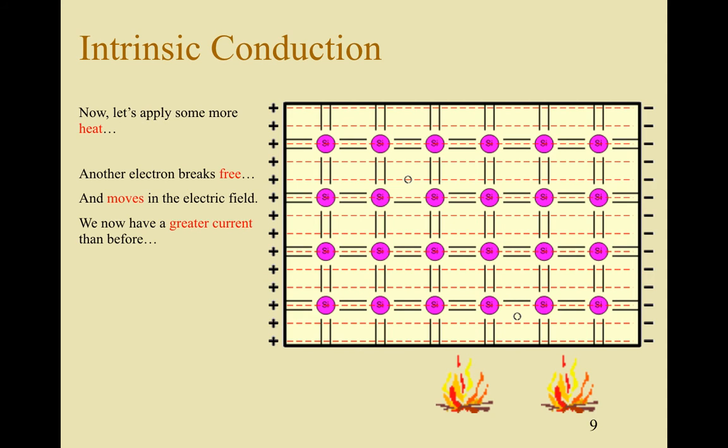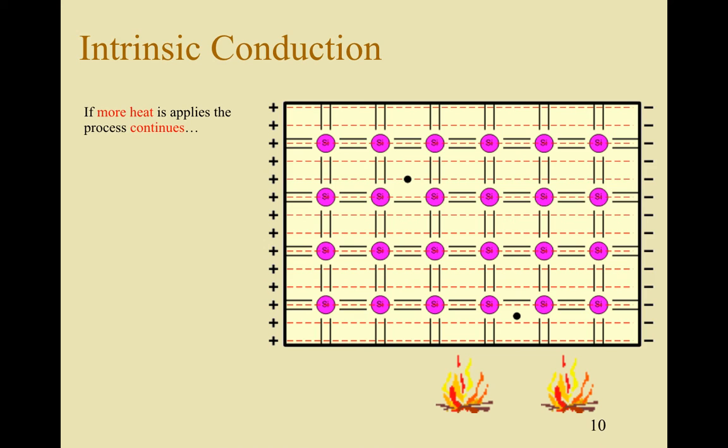As a result greater current than before and therefore if there's greater current it means the silicon has less resistance. So what's really important to remember here is the more heat you apply, the more current that flows and as a result the less resistance that substance is experiencing.